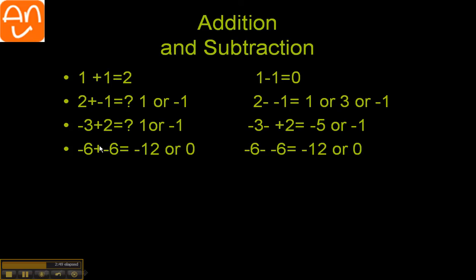Finally, you are going to add same sign numbers. That is negative six plus negative six. So if you are having same sign number, then you have to add. So six plus six is equal to twelve.